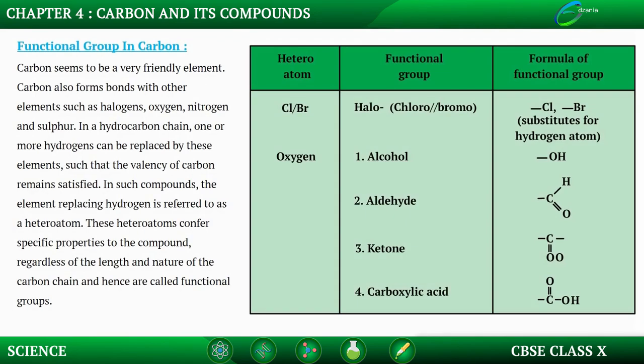Next is the functional group. Carbon forms bonds with other elements like halogens, oxygen, nitrogen, and sulfur. In a hydrocarbon chain, one or more hydrogen atoms can be replaced by these elements such that the valency of carbon remains satisfied. The element replacing hydrogen is referred to as a heteroatom. These heteroatoms give specific properties to the compound regardless of the length and nature of the carbon chain, and hence they are called functional groups.